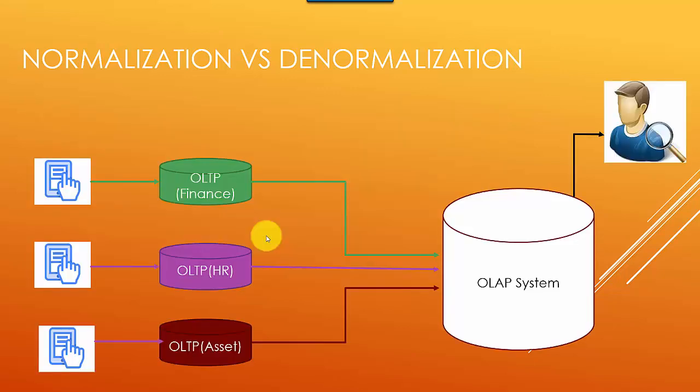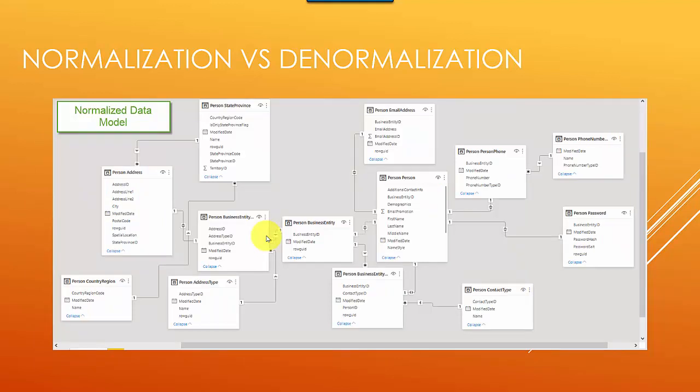Let's look at a normalized data model. For example, if you're capturing a person's data in an organization — maybe that person is a customer — you break it up so you've got a person address table, a region table, and a phone table. If you need to update the address you go to one place, if the region changes you update one table, if the phone number changes you go to the person phone table and modify it. The data is captured in one place with no redundancy.